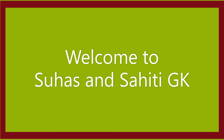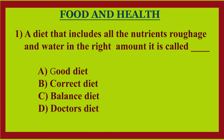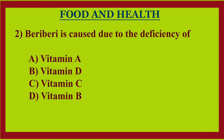Hi guys, welcome to my channel. Today we are learning food and health MCQ. First question: a diet that includes all nutrients, roughage, and water in the right amount is called — option A: good diet, option B: corrupt diet, option C: balanced diet, option D: doctor's diet. Answer: option C, balanced diet.